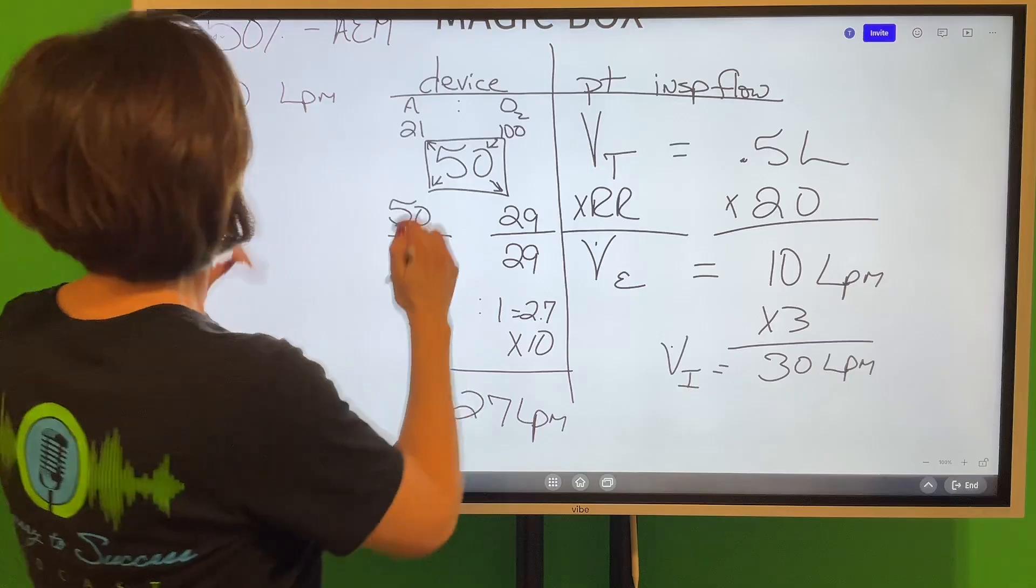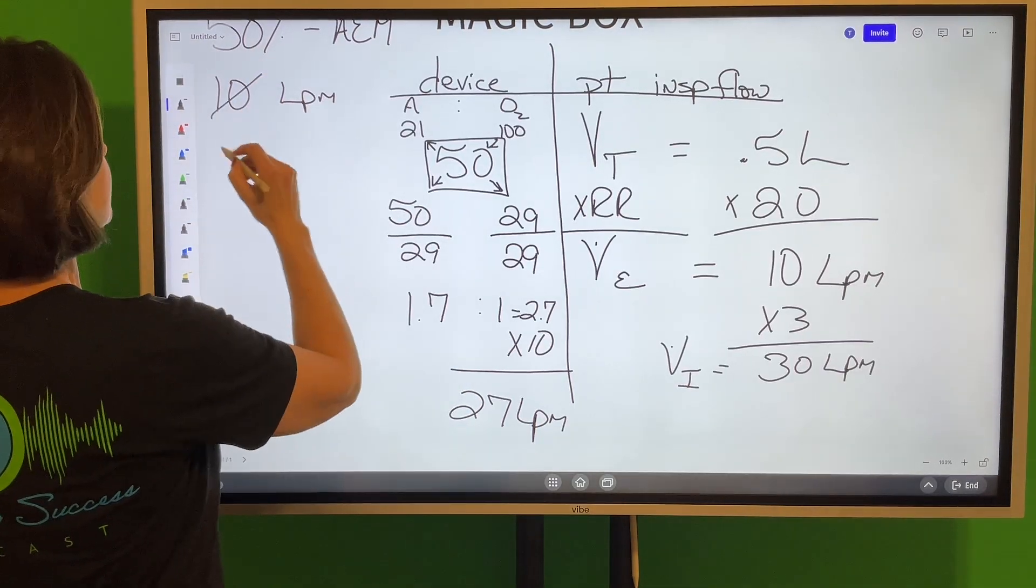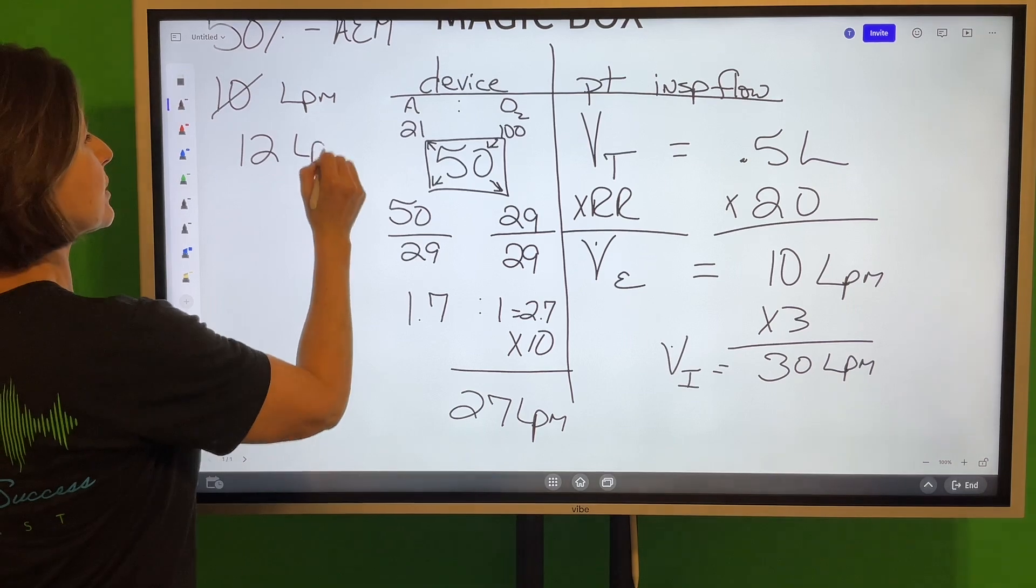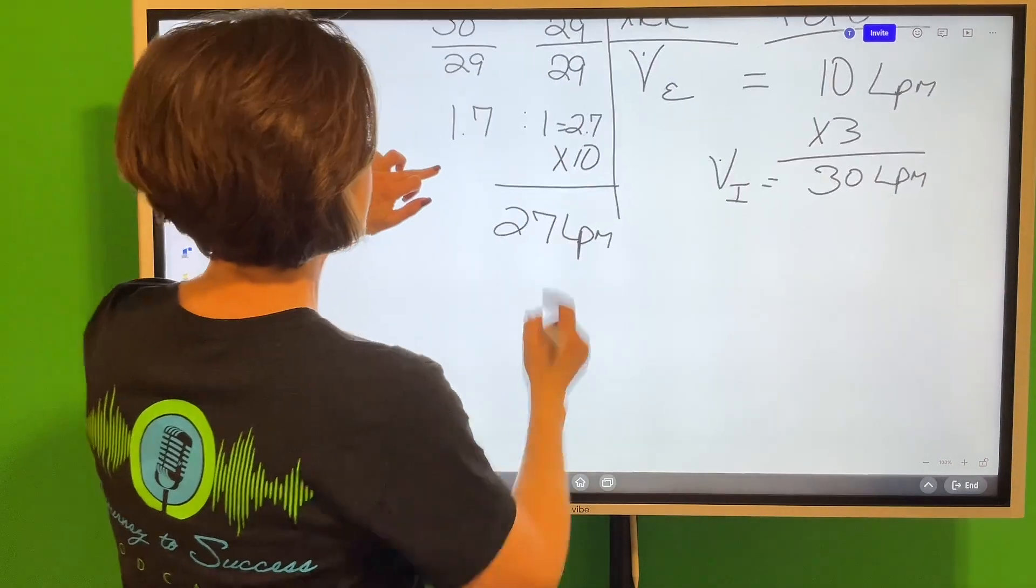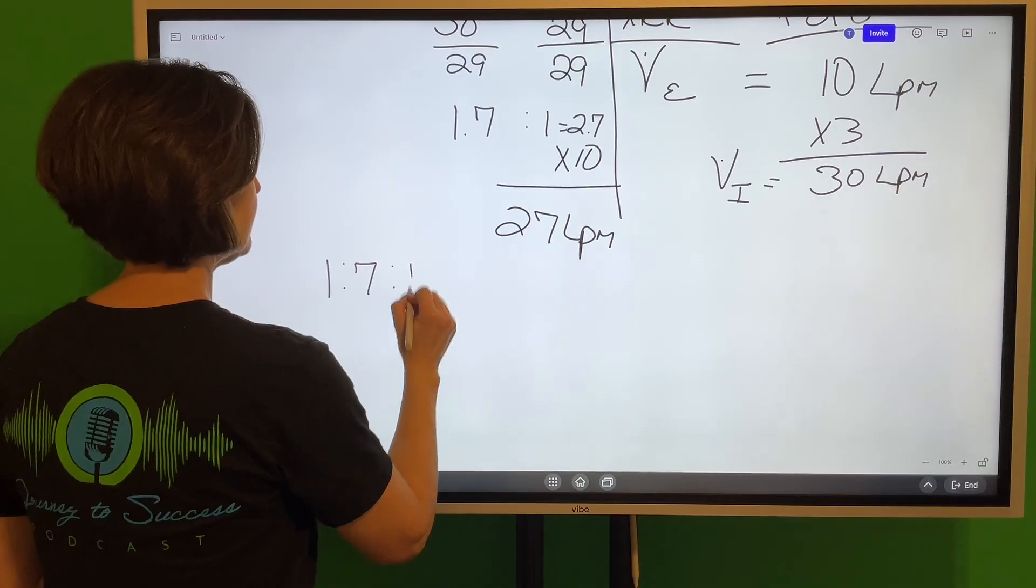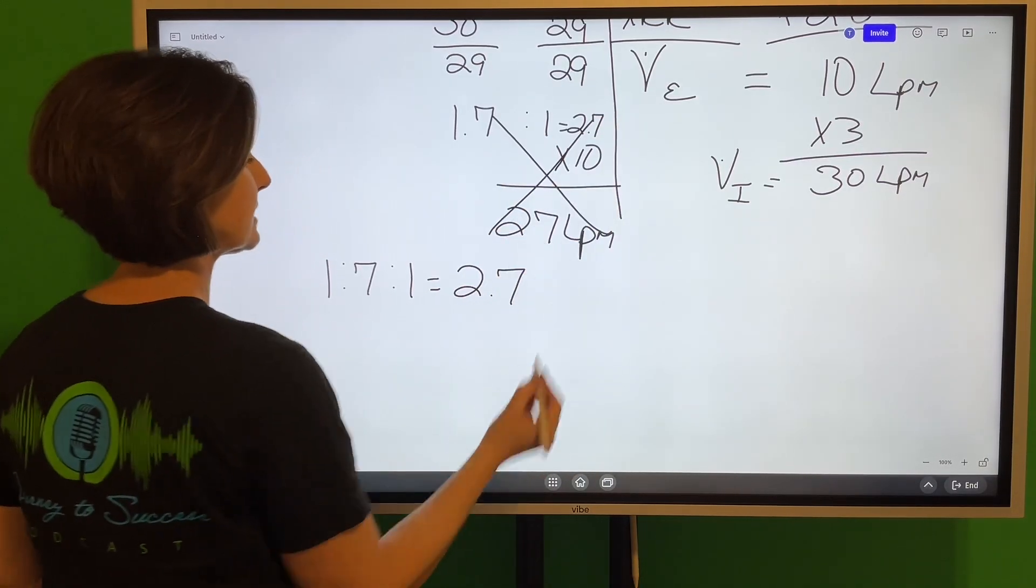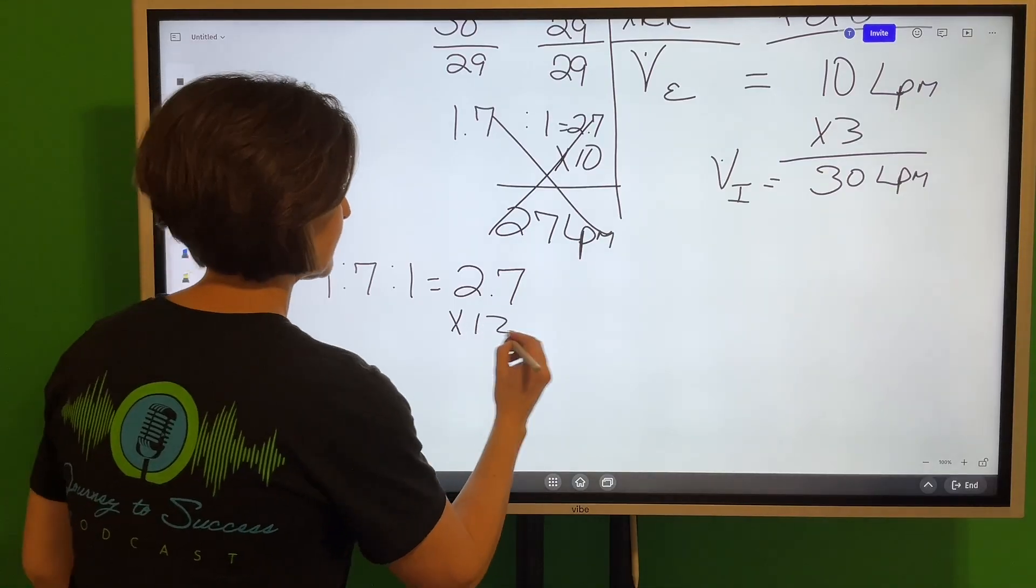We can fix this super easy. All we have to do is turn up the liters per minute on the flow meter. Instead of 10 liters a minute, let's go to 12 liters per minute. Now remember, our air to oxygen ratio is 1.7 to 1. Add those together, it's 2.7.